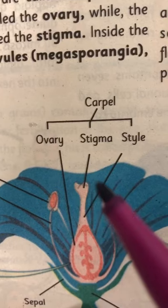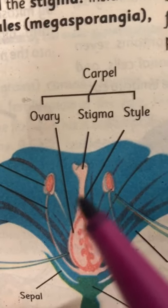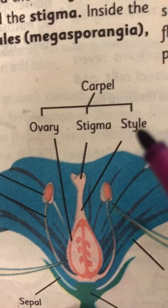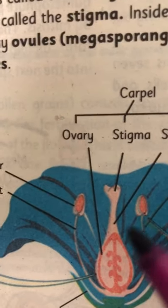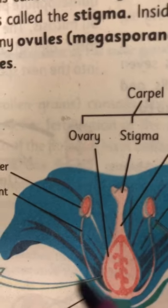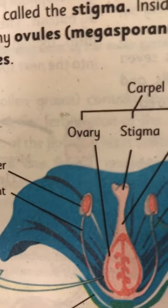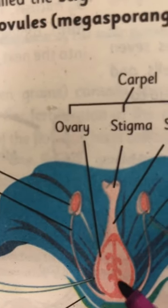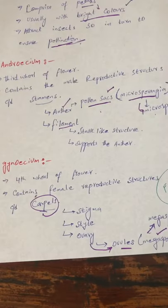The tip of the carpel, which you can see in the diagram, is the stigma. The elongated stalk-like structure is known as the style. The swollen part at the base is the ovary, and the ovary is made up of ovules, which we can call megasporangia. This megasporangia will produce the megaspores, which will help in fertilization.